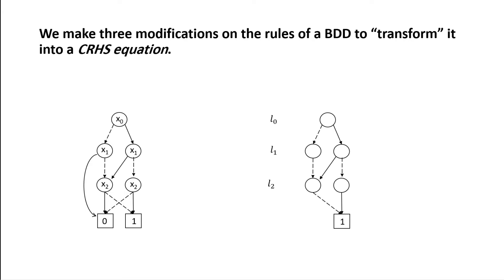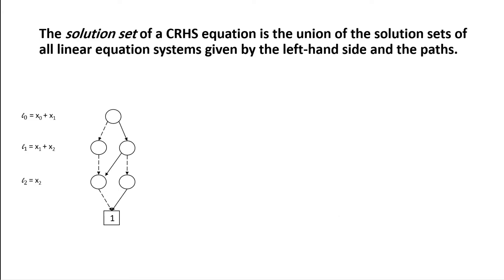The third change is that we allow linear combinations to be associated with levels, instead of only a single Boolean variable. An important aspect of allowing linear combinations is that we now have solution sets for a compressed right-hand side equation. The solution set is the union of the solution sets of all linear equation systems given by the left-hand side and the paths through the graph — which we call the right-hand side.